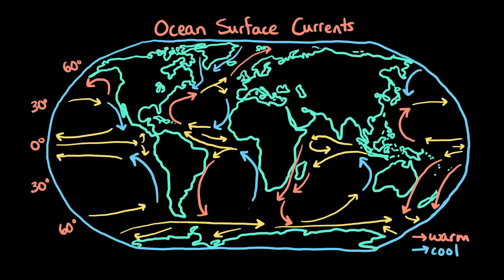Here's what the global pattern of ocean surface currents looks like. Like wind currents, ocean surface currents are also curved due to the Coriolis effect. We can see that in these currents that are traveling north and south, which curve to the right in the northern hemisphere and to the left in the southern hemisphere.